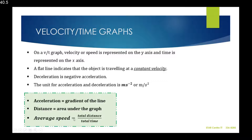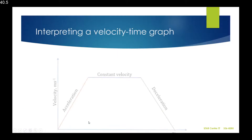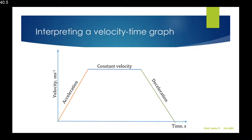Average speed is equal to total distance traveled divided by total time. When interpreting a velocity-time graph, velocity is on the y-axis and time is on the x-axis. Where we have a line with a positive gradient or an upward slope, that means the vehicle or object is accelerating.